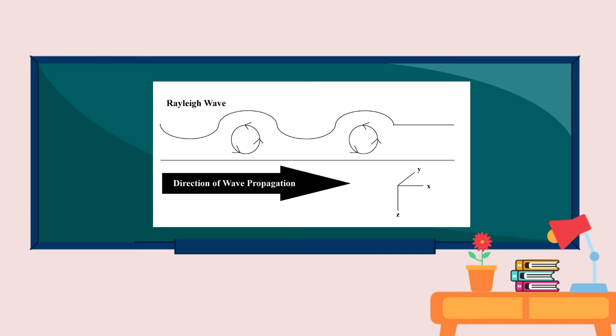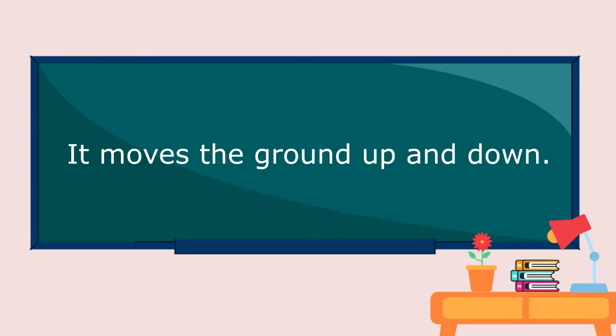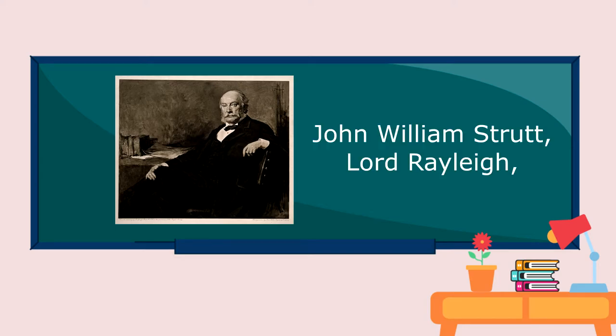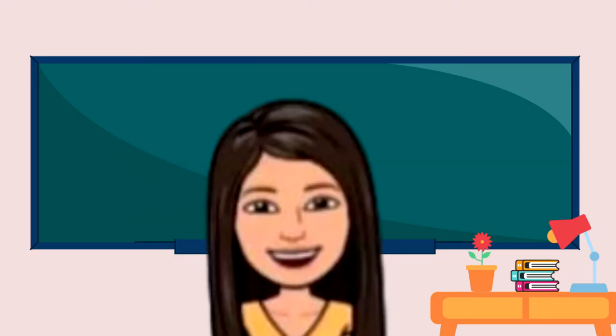The other type of surface wave is the Rayleigh wave. It rolls along the ground like a wave rolls across a lake or an ocean. It moves the ground up and down. By the way, Rayleigh wave was named after John William Stratt, Lord Rayleigh, a British scientist.